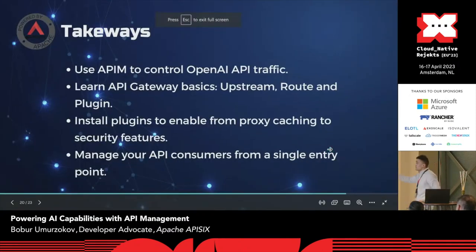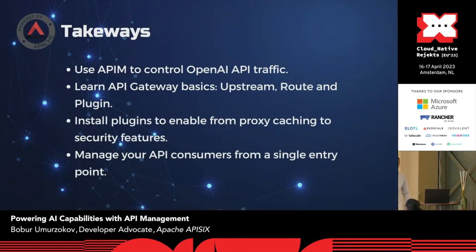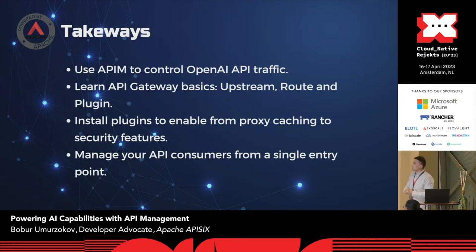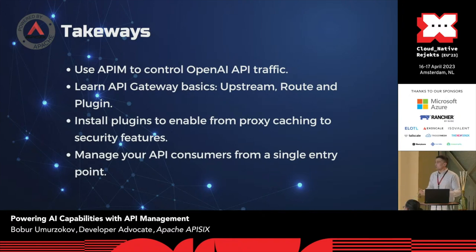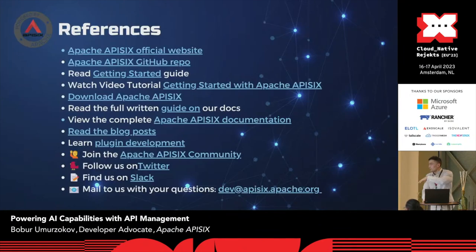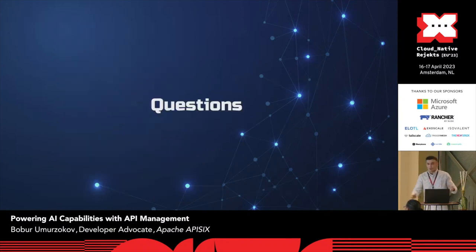Before we finish, here are the takeaways. You can use an API management solution to control your OpenAI API traffic — you can use Azure API Management if you're on Azure cloud, or use an API gateway like APISIX with upstream, route, and plugins to enable proxy caching, security features, and so on. You can also manage your API consumers using the same API gateway from a single entry point. There are references if you'd like to learn more about APISIX or API gateways for free.